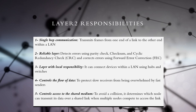Layer 2 handles the transmission of frames from one end of a link to the other. It is a reliable layer which can detect and correct errors in frames. For error detection, algorithms such as parity check, checksum, and cyclic redundancy check (CRC) are used. For error correction, forward error correction (FEC) is implemented within protocols of Layer 2 such as Ethernet and Wi-Fi.